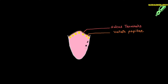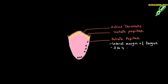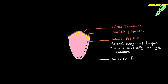The second type is foliate papillae. As the name suggests, 'foliate' means leaf-like, so they have leaf-like projections. They are present on the lateral margins of the tongue, on the tip, and on the posterior end. They are not large in number — only 3 to 4 — and are vertically arranged mucous pores. The anterior foliate papillae are innervated by the facial nerve.